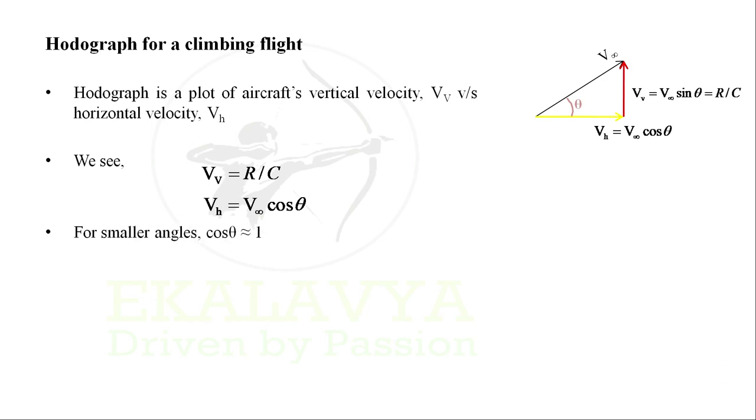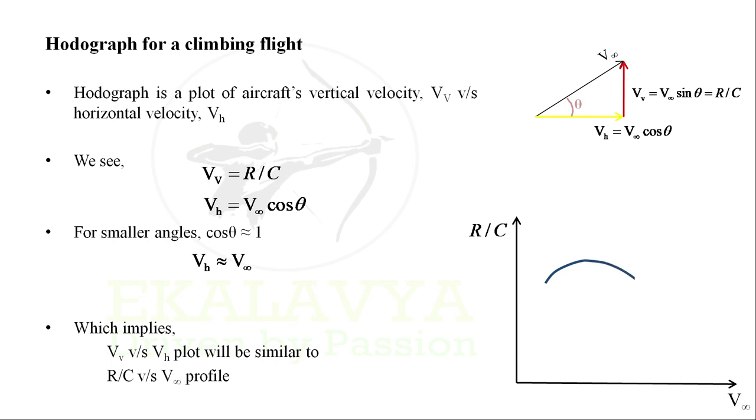For smaller angles, cos theta approximates to 1 with which horizontal velocity VH approximates to V infinity. Which implies vertical velocity VV versus horizontal velocity VH plot will be similar to rate of climb versus V infinity profile.